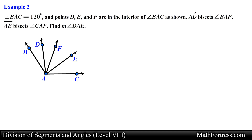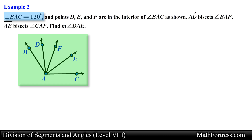Let's end the video series with a final example. Angle BAC is equal to 120 degrees. Endpoints D, E, and F are in the interior of angle BAC as shown. Ray AD bisects angle BAF. Ray AE bisects angle CAF. Find the measurement of angle DAE. In this problem we are provided with a diagram along with the measurement of an angle and a couple of geometric relations between rays and angles. We are asked to find the measurement of a particular angle.